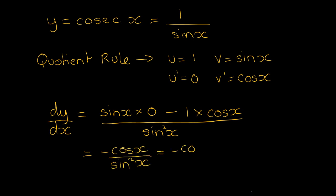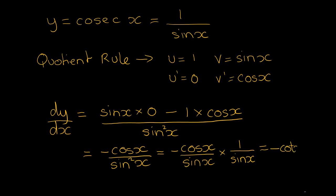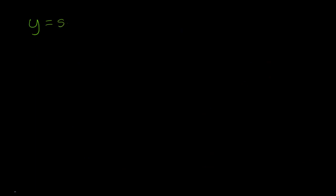Splitting this up into minus cos x over sine x times 1 over sine x, this leads to minus cot x times cosec x. Now let's find out what you get when you differentiate sec x, which is really 1 over cos x.